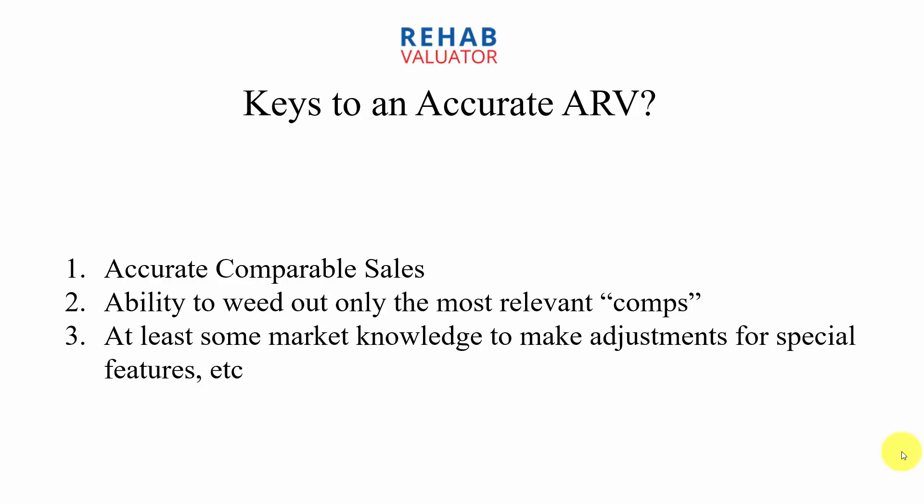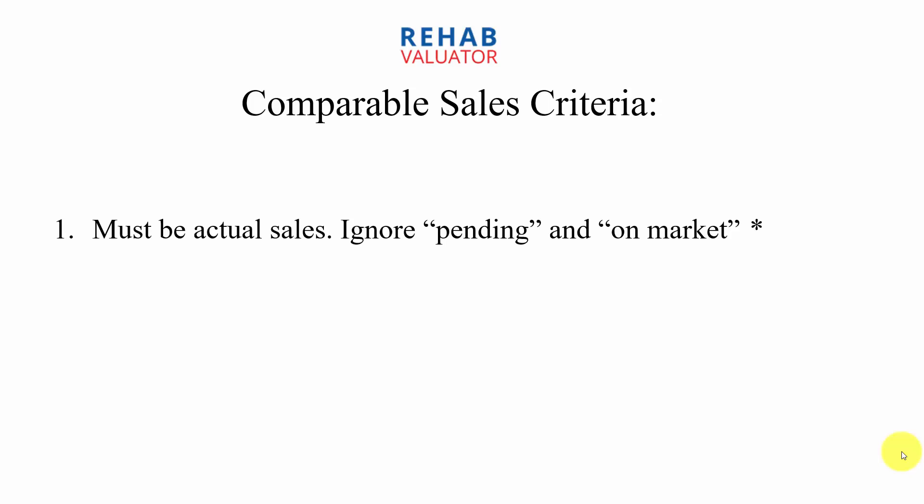Having some basic market knowledge of the local market where you're going to be doing deals is important. For comparable sales criteria, you have to be looking at actual sales — properties that have actually sold. Ignore pending sales because a property may be listed at $400,000 but it could be pending at $330,000. Ignore properties that are on the market, because again a property might be listed for $400,000 but nobody wants to buy it for that price. I still like to look at what's on the market though, because it gives me an idea of what's going on.